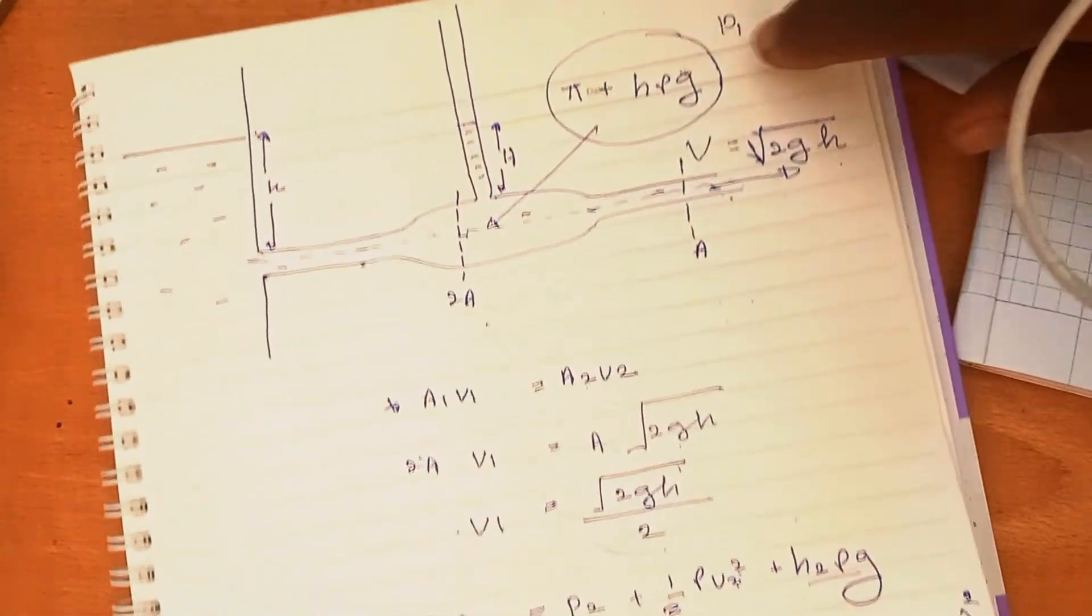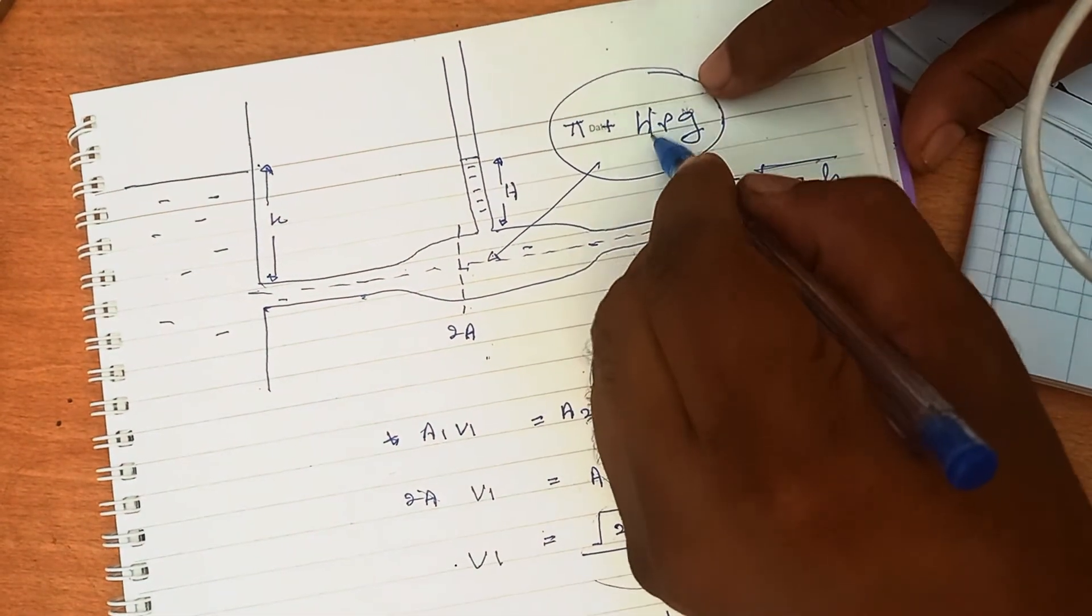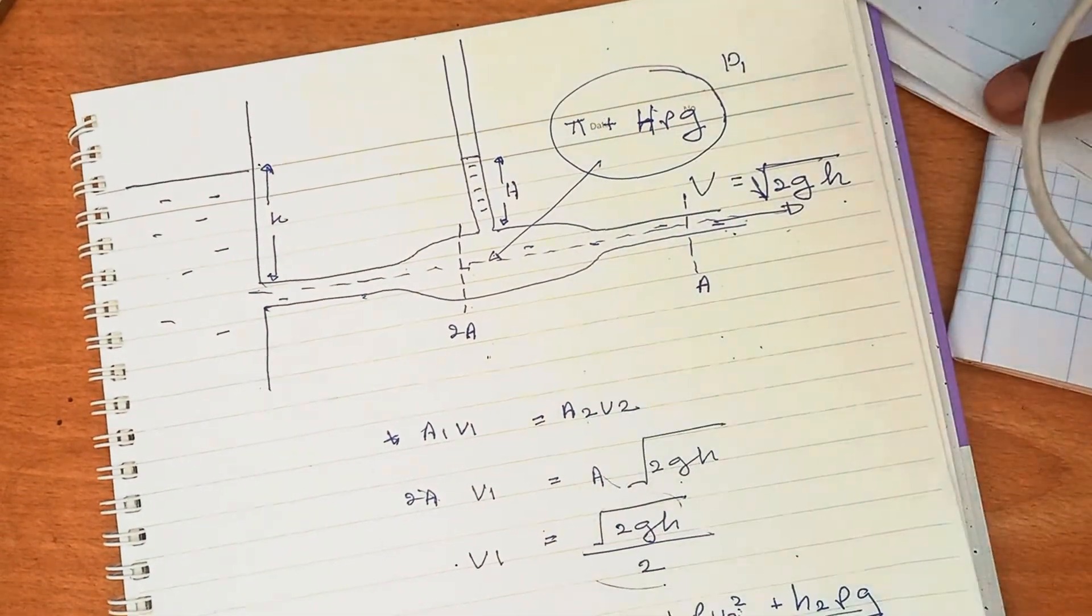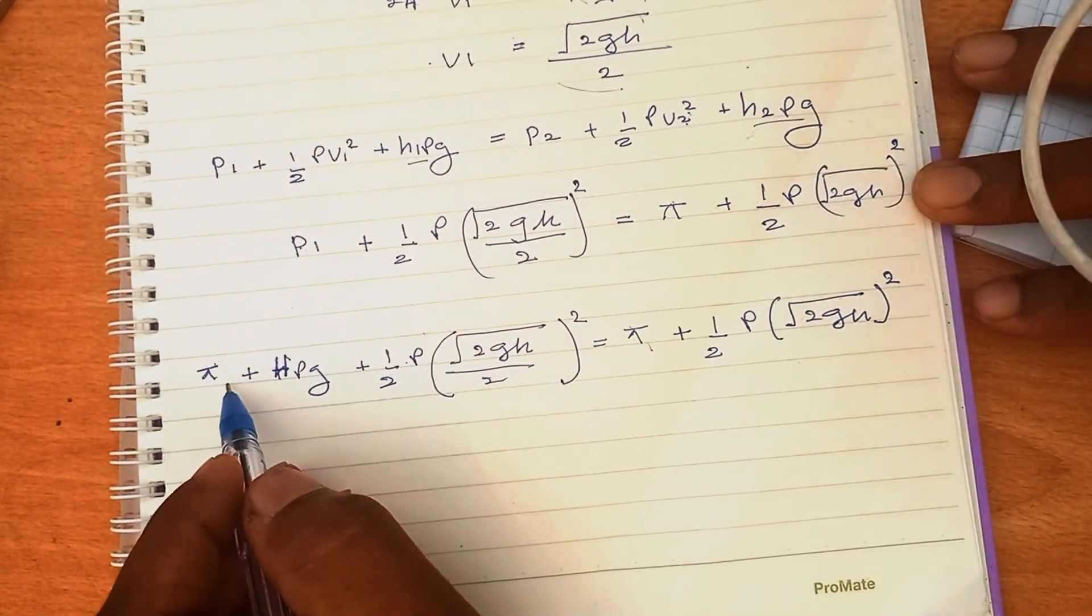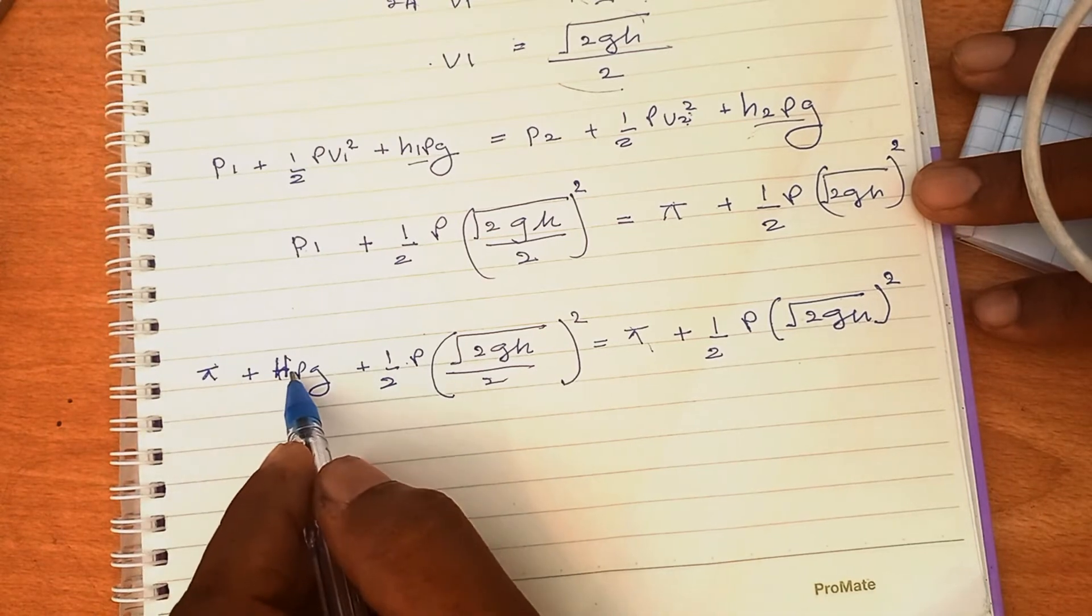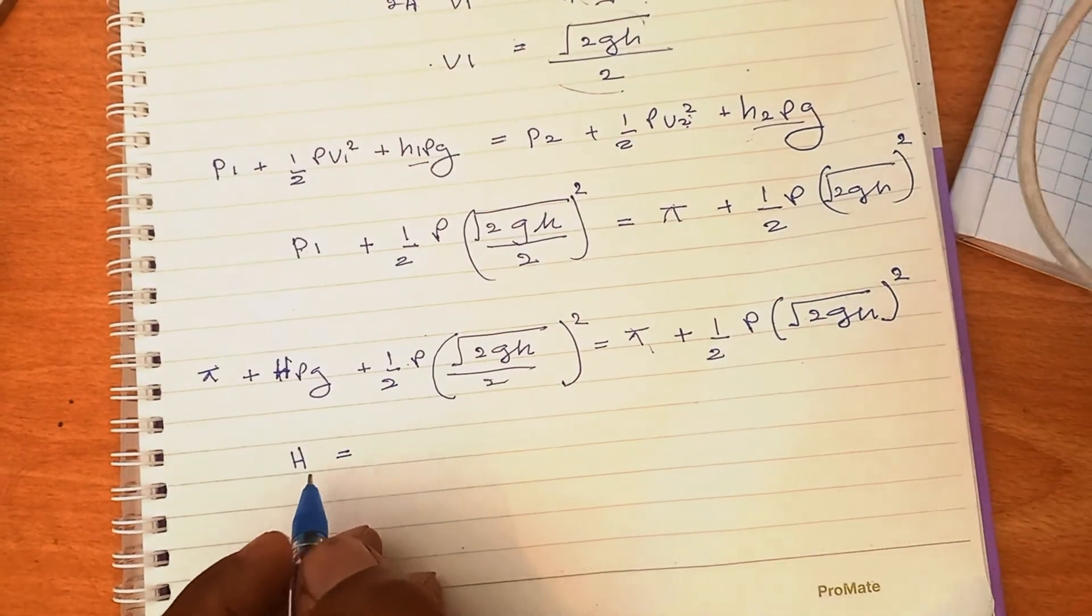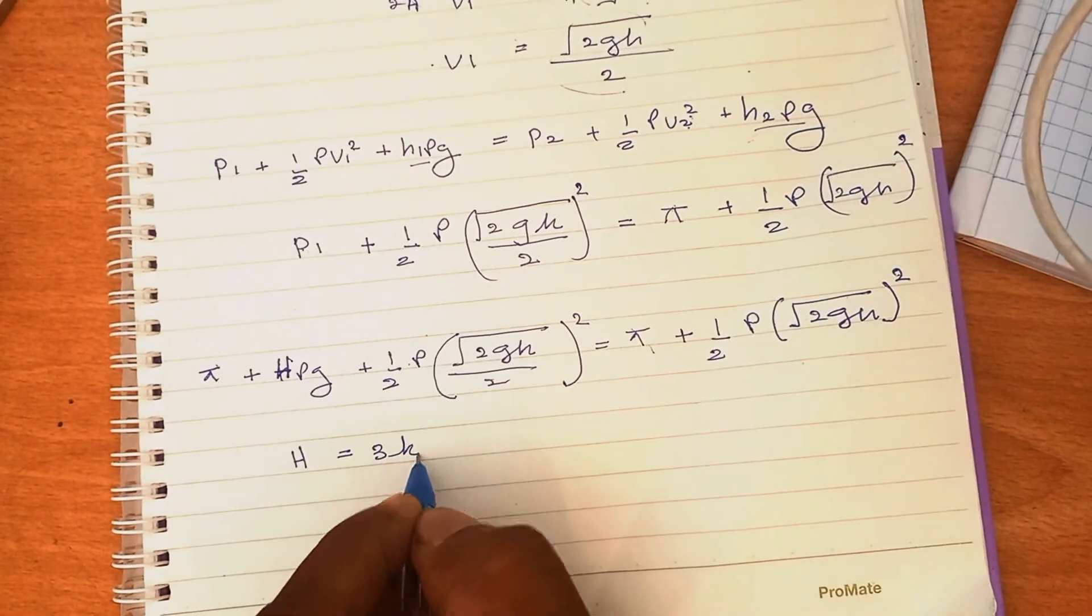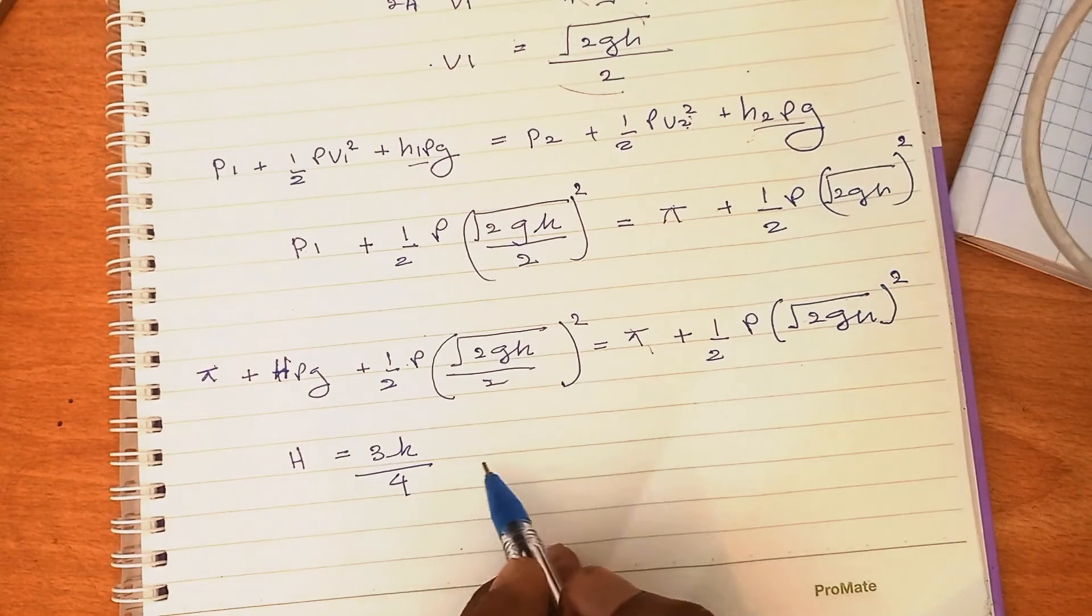This is capital H. Pᵢ cancels. Now make an expression for capital H. Capital H equals 3h/4. Simplify yourself.